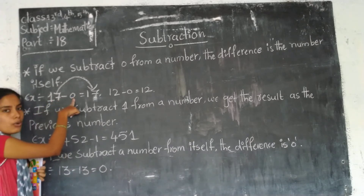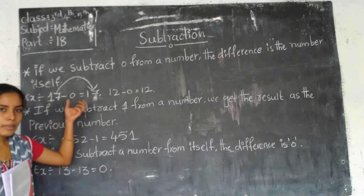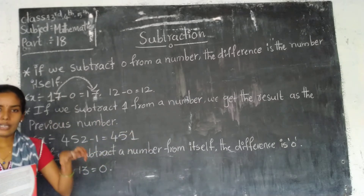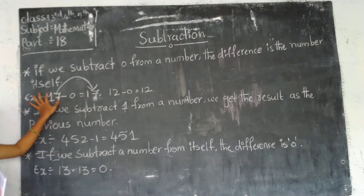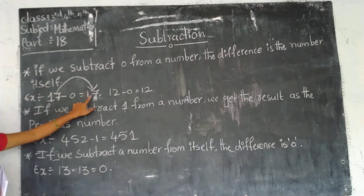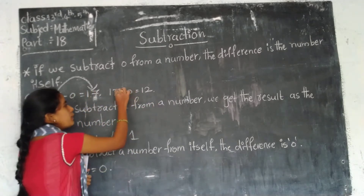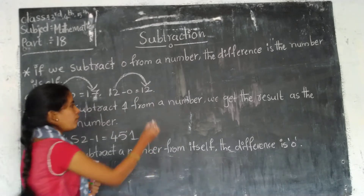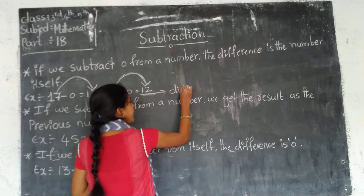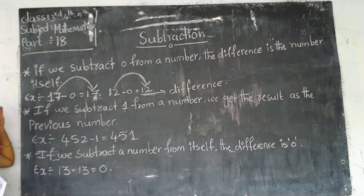Any number subtract 0 — the answer is that same number. For example, 12 minus 0 equals 12. So any number subtract 0 gives the same number as the answer. Here 12 is the difference. This is the first property: if we subtract 0 from a number, the difference is the number itself.